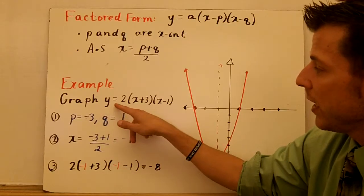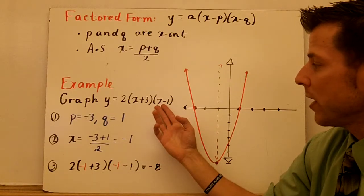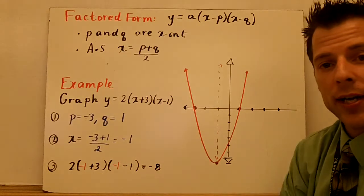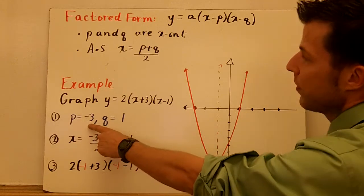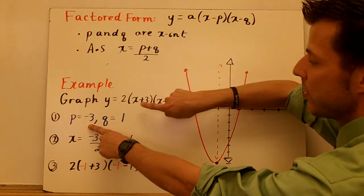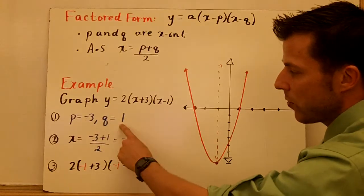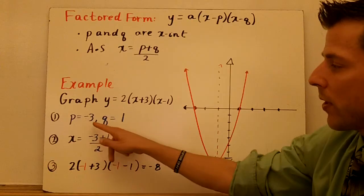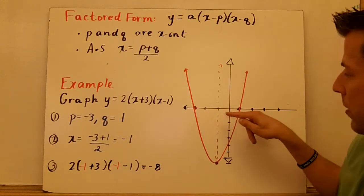Graph y equals 2 times the quantity x plus 3 times the quantity x minus 1. Step number one, identify p and q. P equals negative 3. Notice how it's in standard form is minus p, and here it's plus p. So that means it has to be negative. Q is going to be 1. So those are our x-intercepts. Let's plot them. Negative 3, 0. 1, 0.